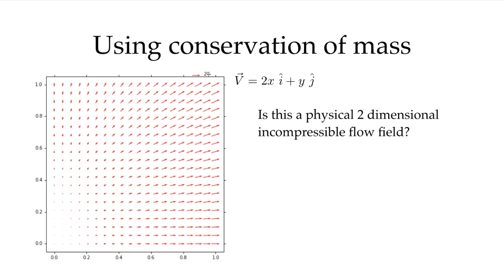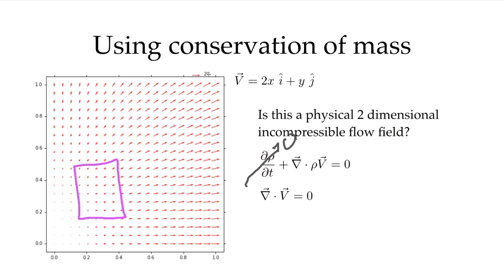If this is an incompressible flow field, my conservation of mass equation has the time-derivative term equal to zero. I can pull density out of the divergence operator, divide through, and the density is removed. I'm left with the divergence of the velocity equal to zero. The divergence being zero means that the sum of flow going into any closed surface equals the flow going out — for any arbitrary box I draw.